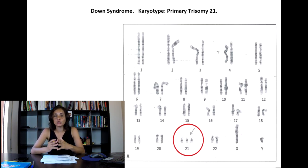Primary trisomy 21 is the most frequent alteration since it appears in most people who have Down syndrome.